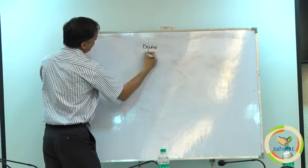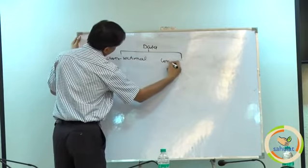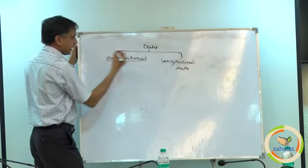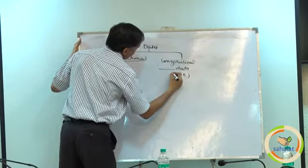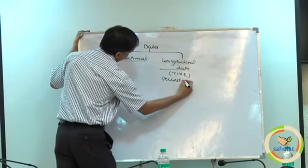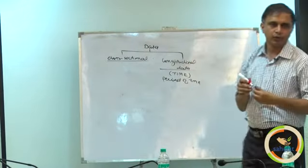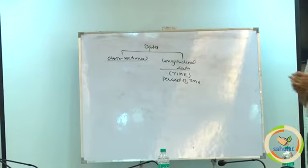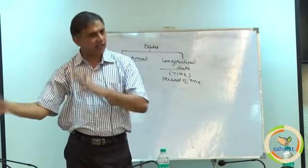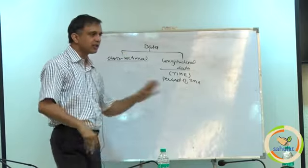Data is of the following types: one is cross-sectional data and the other is longitudinal data. Any idea about that? Time is a very important element. It is about over the period of time versus when no time element is present or data is collected at one go. If I start noting everybody's age — what is your age, what is your age — his age has anything to do with her age? No. This is called independent. This is the cross-sectional. Cross-sectional is a word from mathematics: length into breadth.